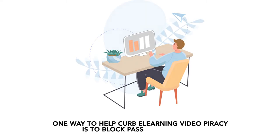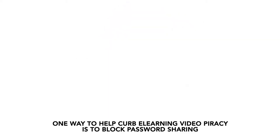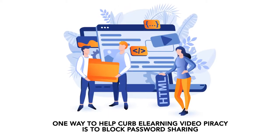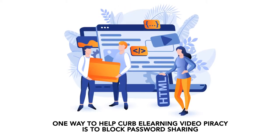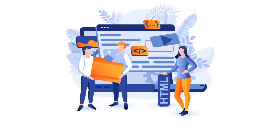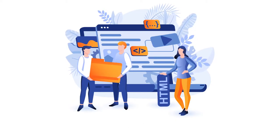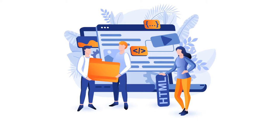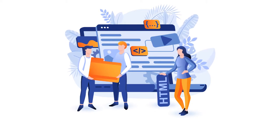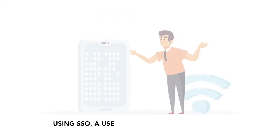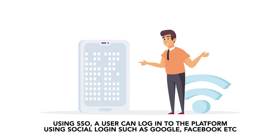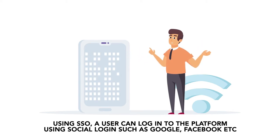One way to help curb e-learning video piracy is to block password sharing. If your website is based in WordPress, one simple way to do this is by using a WordPress plugin to block simultaneous logins. You can also utilize a single sign-on for login to the user account. Using SSO, a user can log into the platform using social logins such as Google, Facebook, etc.